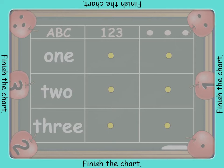Finish the chart by putting all the apples that show 1 in the first row, all the apples that show 2 in the second row, and all the apples that show 3 in the third row. Drag each apple onto the right spot.